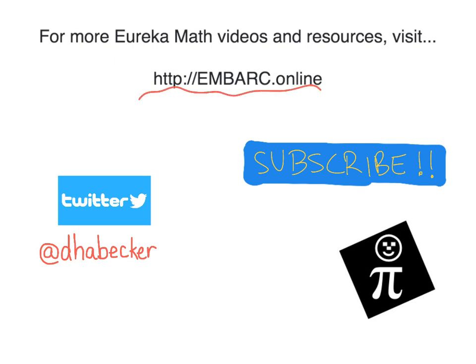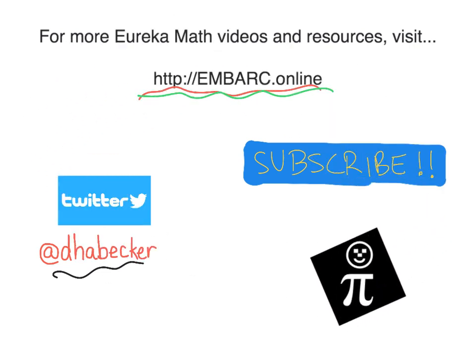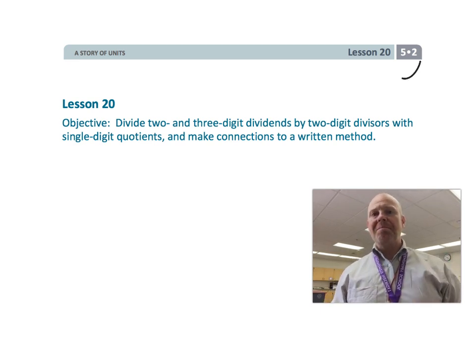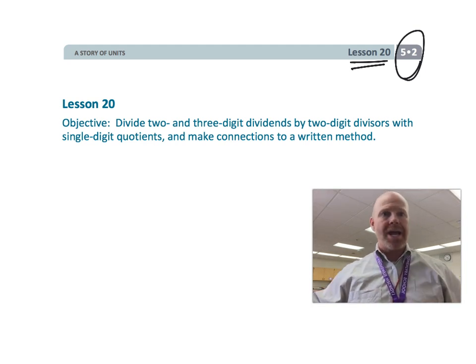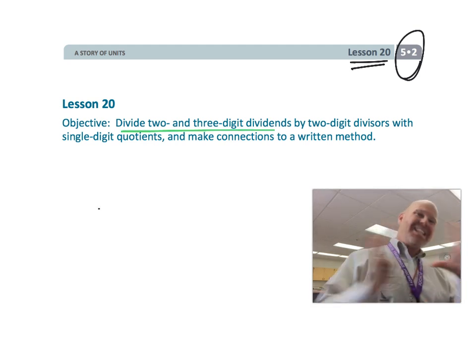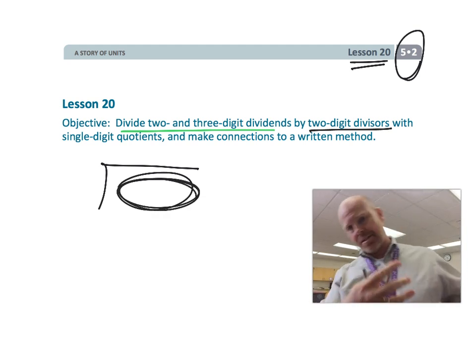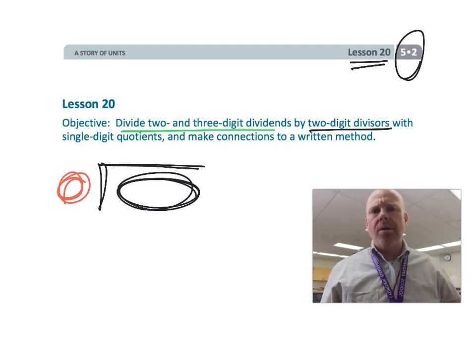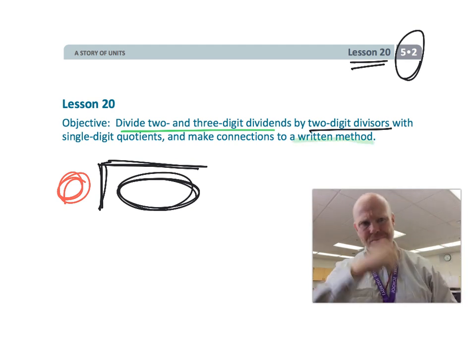Hey, thanks for watching this video. There's more at Embark Online. You can tweet me and there is the Pi Guy. All right, this is fifth grade module 2 lesson 20 and in this lesson students are going to be dividing two and three-digit dividends, that's the number inside the house by two-digit divisors and that's the number outside of the house. So let's get started.